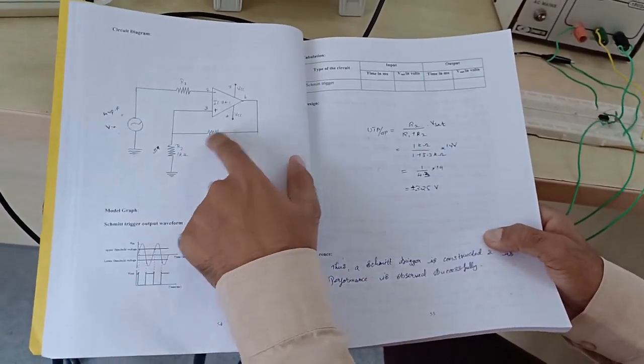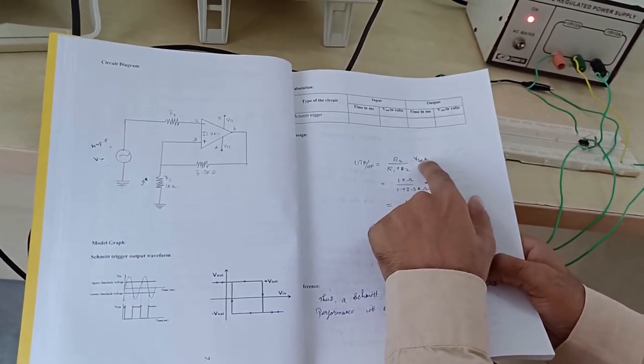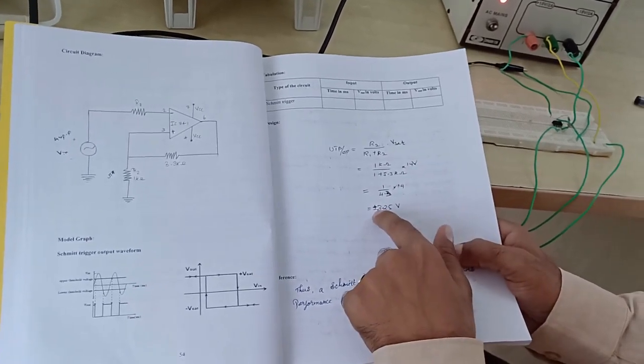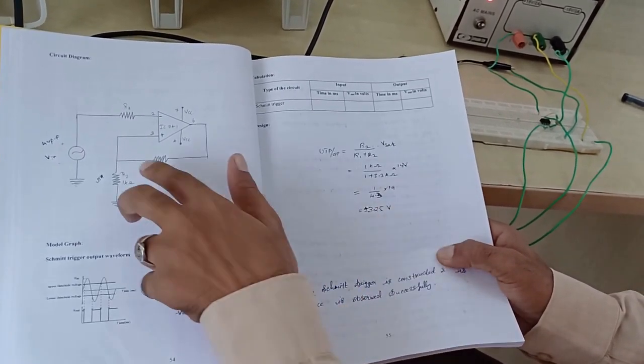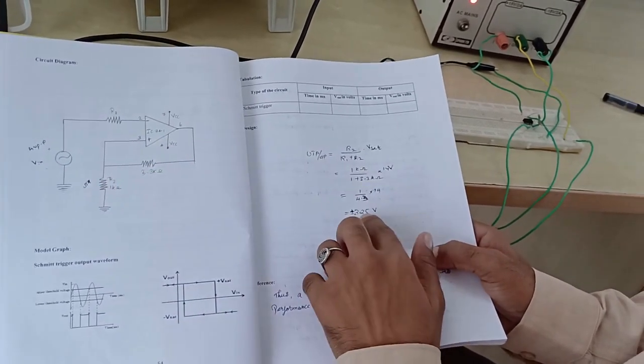R2 divided by R1 plus R2 into Vz. By calculating, we are getting plus or minus 3.25 volts. UTP and LTP is plus or minus 3.25 volts.